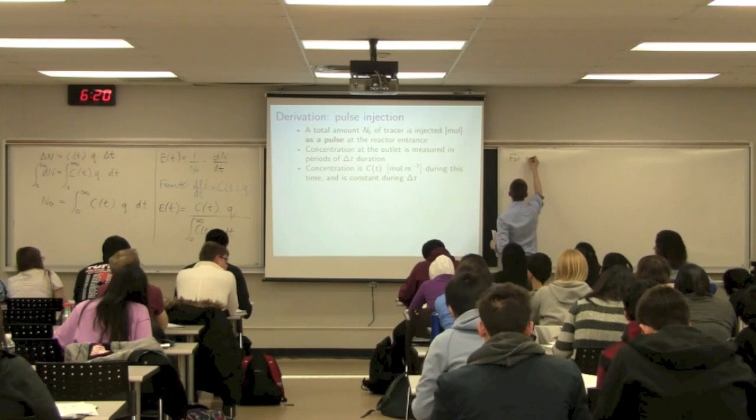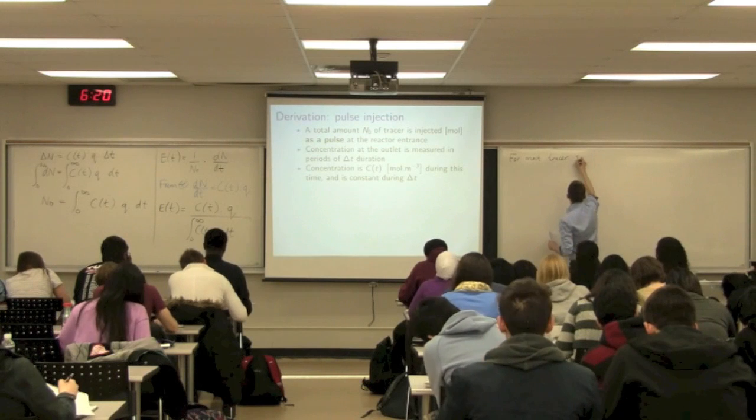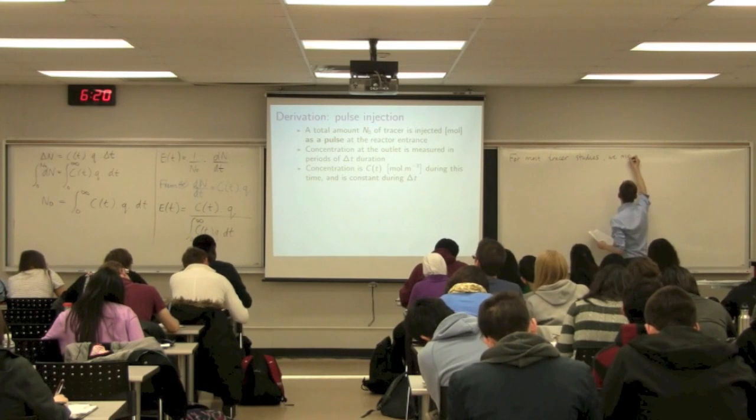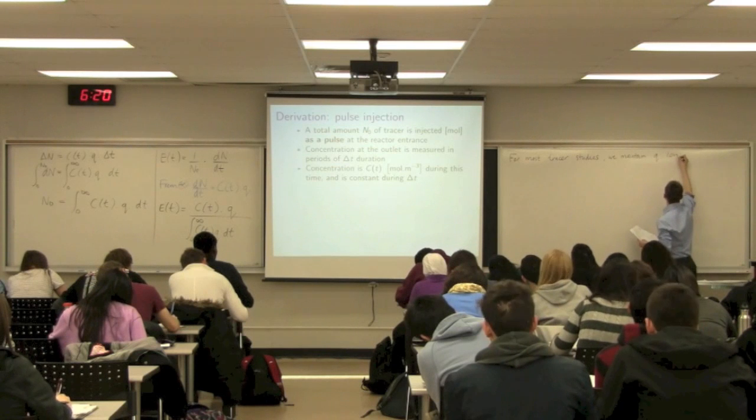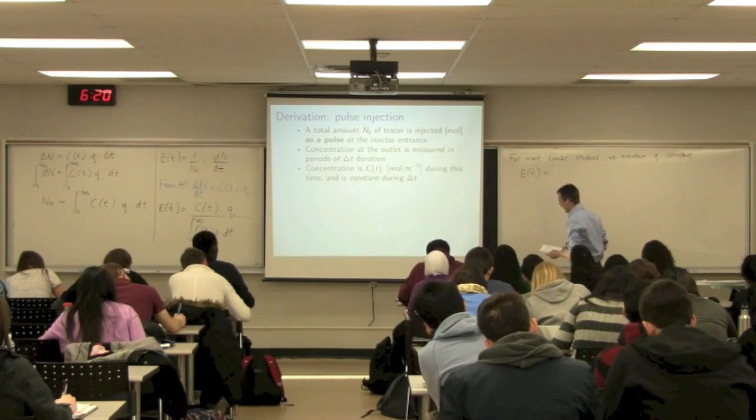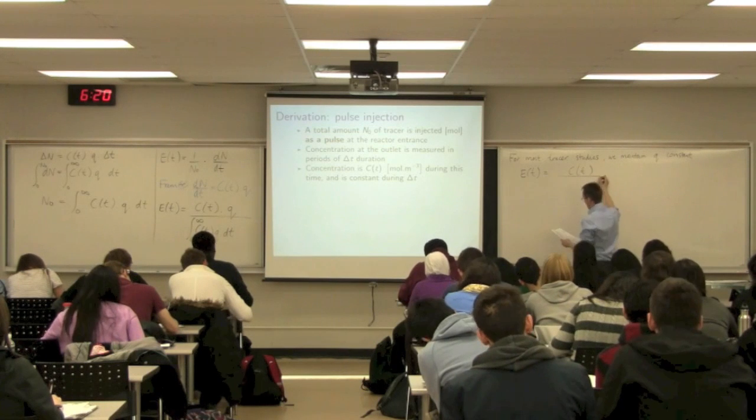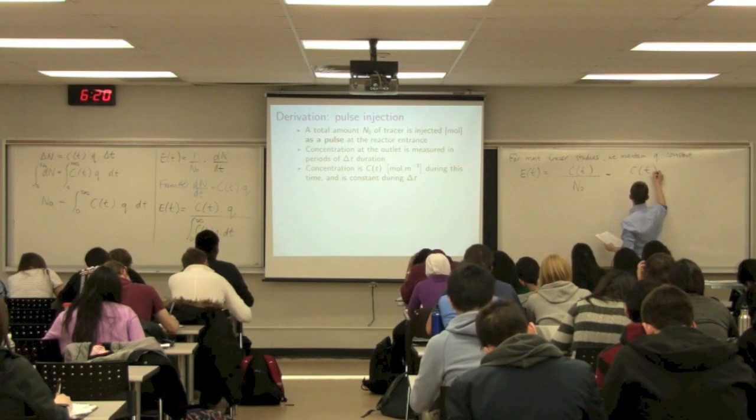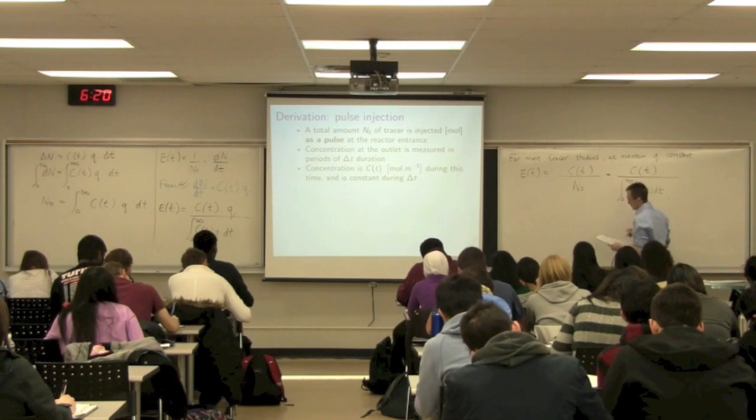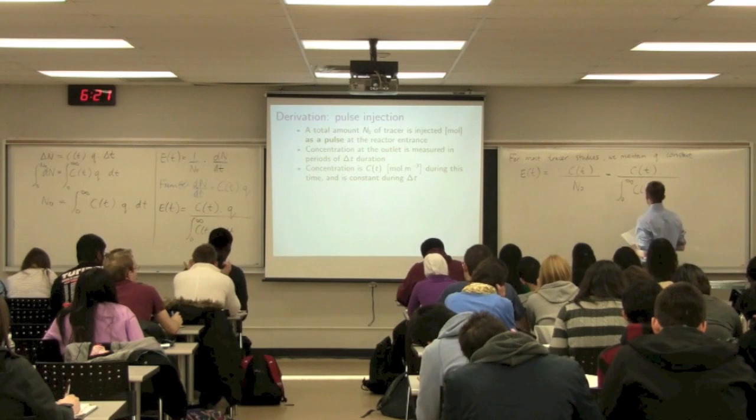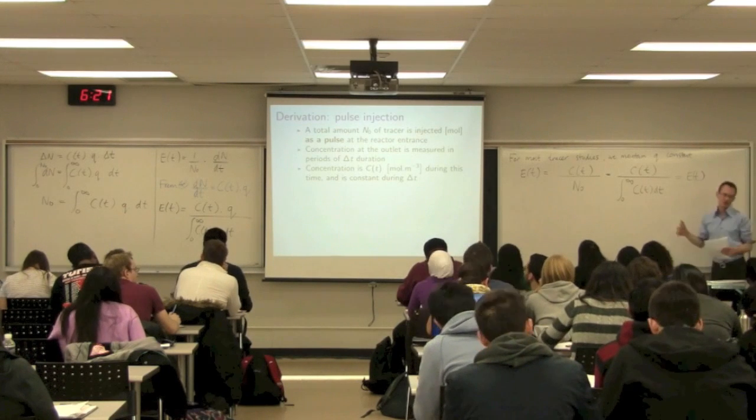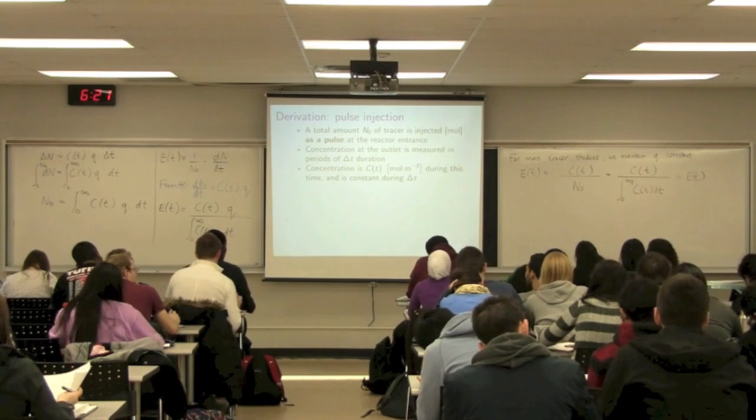And then we end off by saying for most tracer studies, when we're doing these tracer studies, one thing we do aim for is to maintain our flow rate constant. For most tracer studies, we maintain Q constant. And that gives us some simplification, that E of T, that curve E of T, the residence time distribution function is equal to C of T over the integral from zero to infinity of C of T dt. So this is actually quite a great simplification. It's easy to interpret what the numerator and denominator are here. We'll go through this in tomorrow's class and look at a problem in this section.